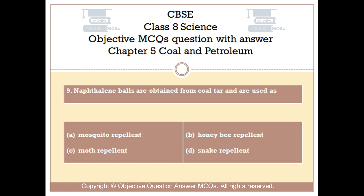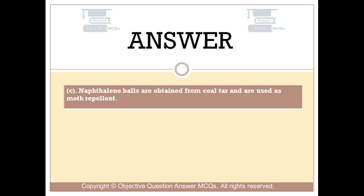Question number 9. Naphthalene balls are obtained from coal tar and are used as — Option A: Mosquito repellent. Option B: Honey bee repellent. Option C: Moth repellent. Option D: Snake repellent. The right answer is Option C. Naphthalene balls are obtained from coal tar and are used as moth repellent.